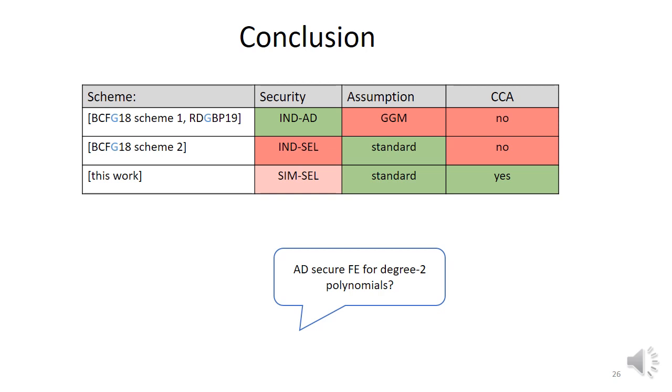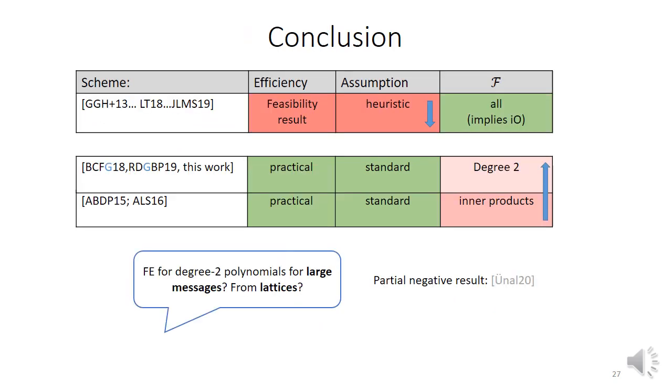So we have seen a scheme that is simulation secure under standard assumption for degree two polynomials, and it's even CCA secure almost for free. Natural question that comes up is can we get actually adaptive security? More generally would be interesting to study the class of function that can be built from standard assumption and thereby narrowing this gap and understanding exactly what separates us from a full-fledged FE.